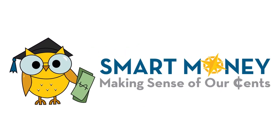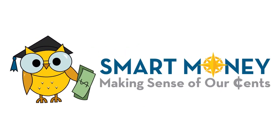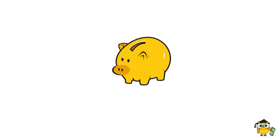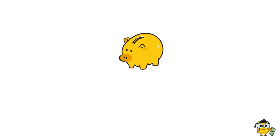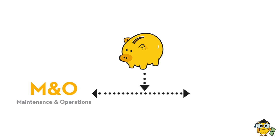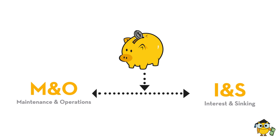Welcome to Leander ISD's Smart Money Explainer on School Finance. Let's start with the tax rate. As revenues come into the school district, funds are split between two sides of the tax rate: the M&O, or maintenance and operations, and the INS, or interest and sinking. It's important to note that the money generated on each side can only be used for specific types of expenses.